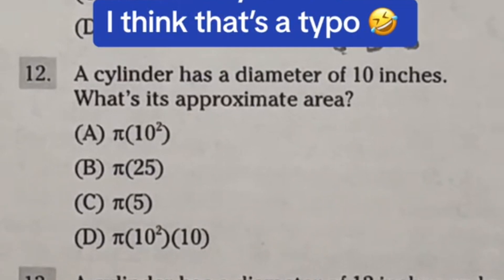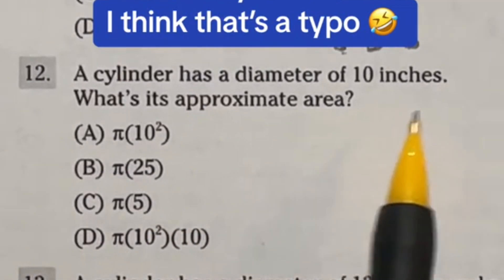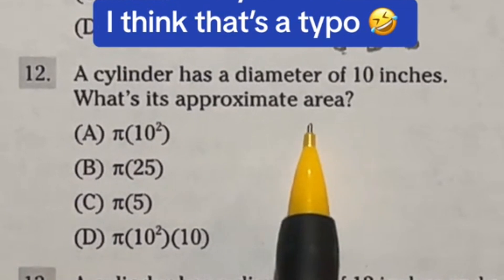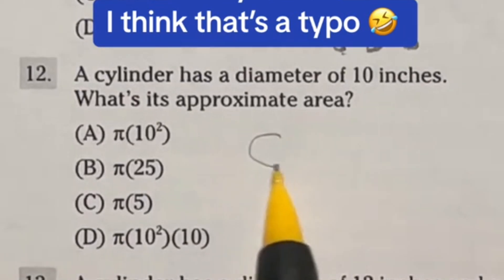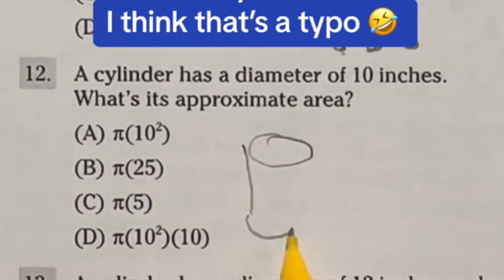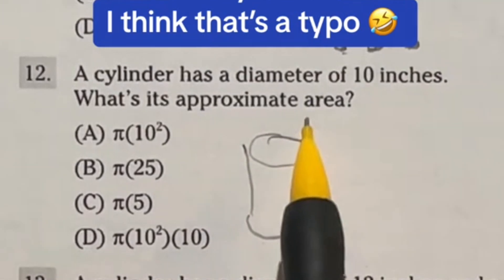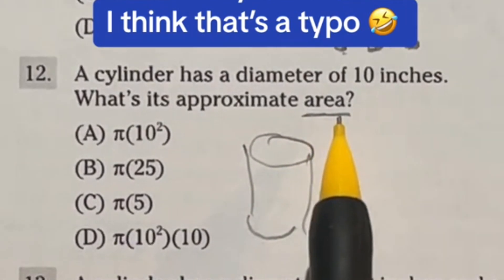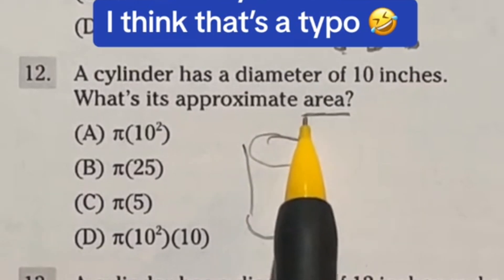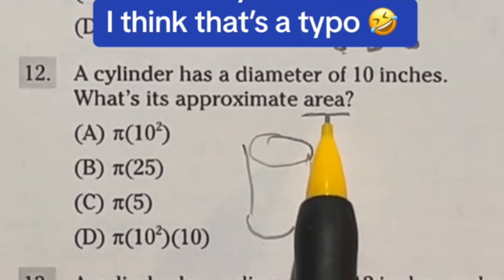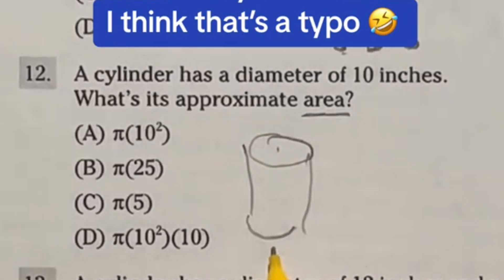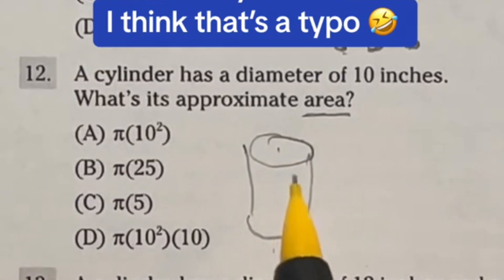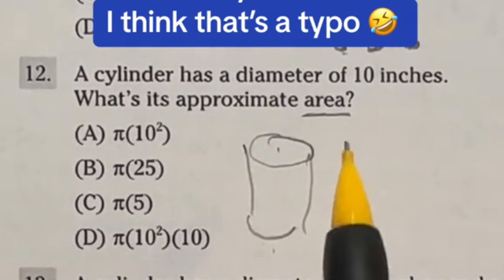Number 12 says a cylinder has a diameter of 10 inches. What's its approximate area? Now this is crazy because if we're talking here, a cylinder, it's talking about area. I'm not sure if this is a typo. Should it really actually say volume? Because we're talking about a three dimensional shape? Or is it talking like the surface area of this entire thing, which would be this plus this and then the rectangle right here? Let's go ahead and take a look and see which one we think it is.